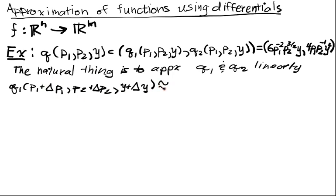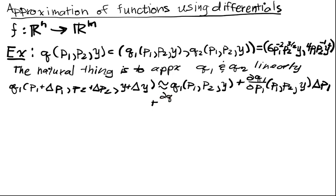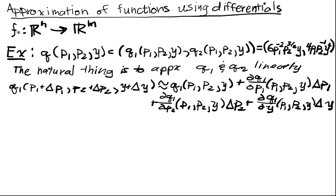It's approximately Q1 evaluated at P1, P2, Y and then we'll add the term partial Q1 with respect to P1 of P1, P2, Y times delta P1 plus partial Q1 with respect to P2, going through all the coordinates, P1, P2, Y delta P2 plus DQ1/DY P1, P2, Y delta Y. That was our linear approximation for Q1.